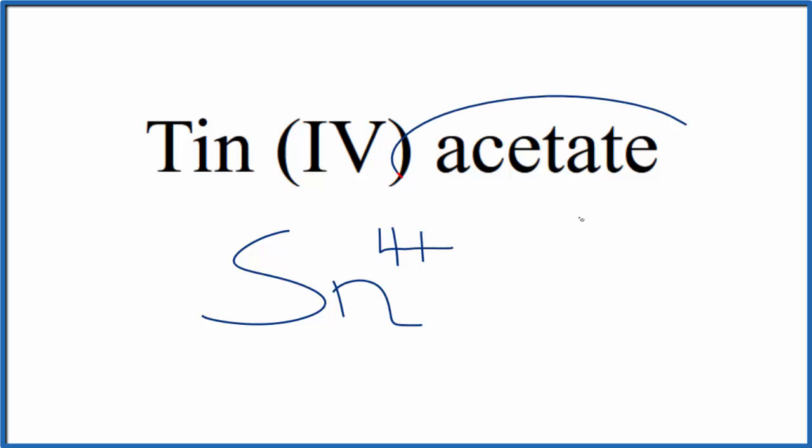For the acetate ion, you're not going to find that on the periodic table. This A-T-E tells you that we have a polyatomic ion. So you either memorize that the acetate ion is CH3COO with a 1 minus charge, or you look it up.